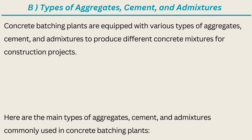B. Types of Aggregates, Cement, and Admixtures of Concrete Batching Plant. Concrete batching plants are equipped with various types of aggregates, cement, and admixtures to produce different concrete mixtures for construction projects. Here are the main types of aggregates, cement, and admixtures commonly used in concrete batching plants.